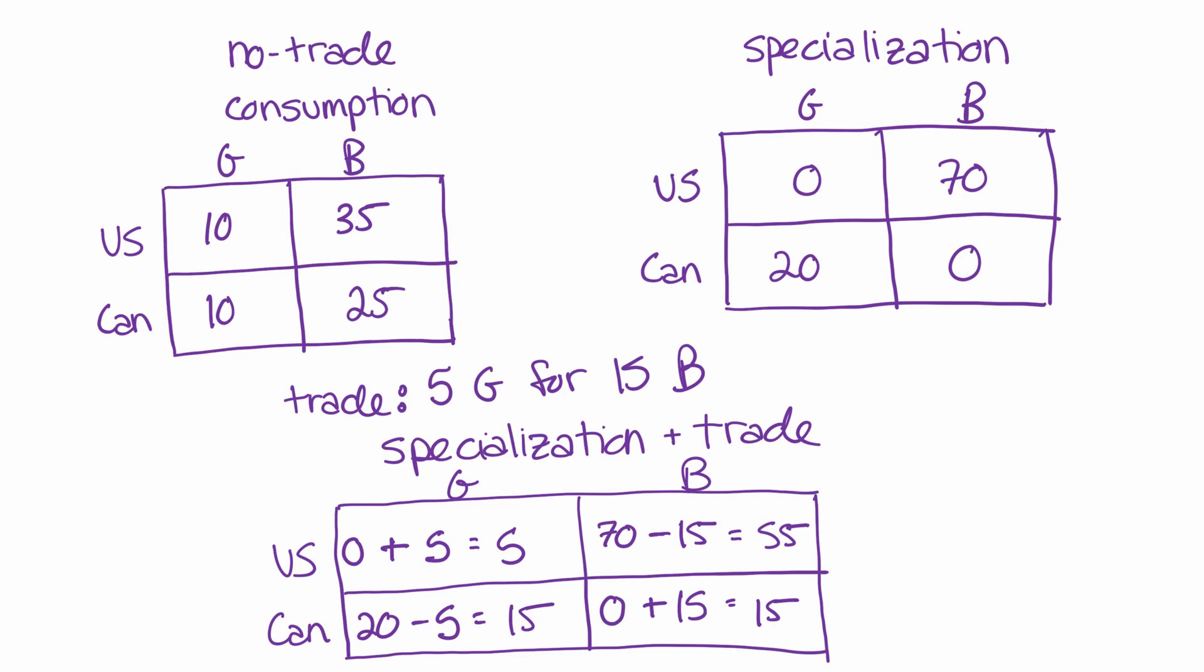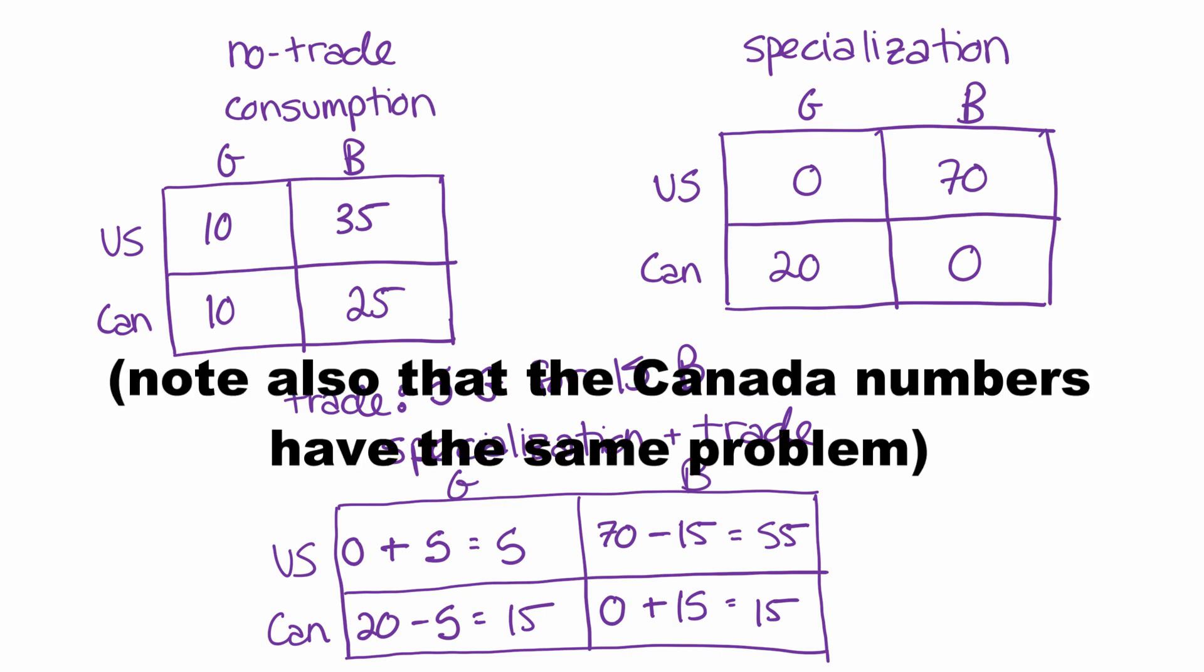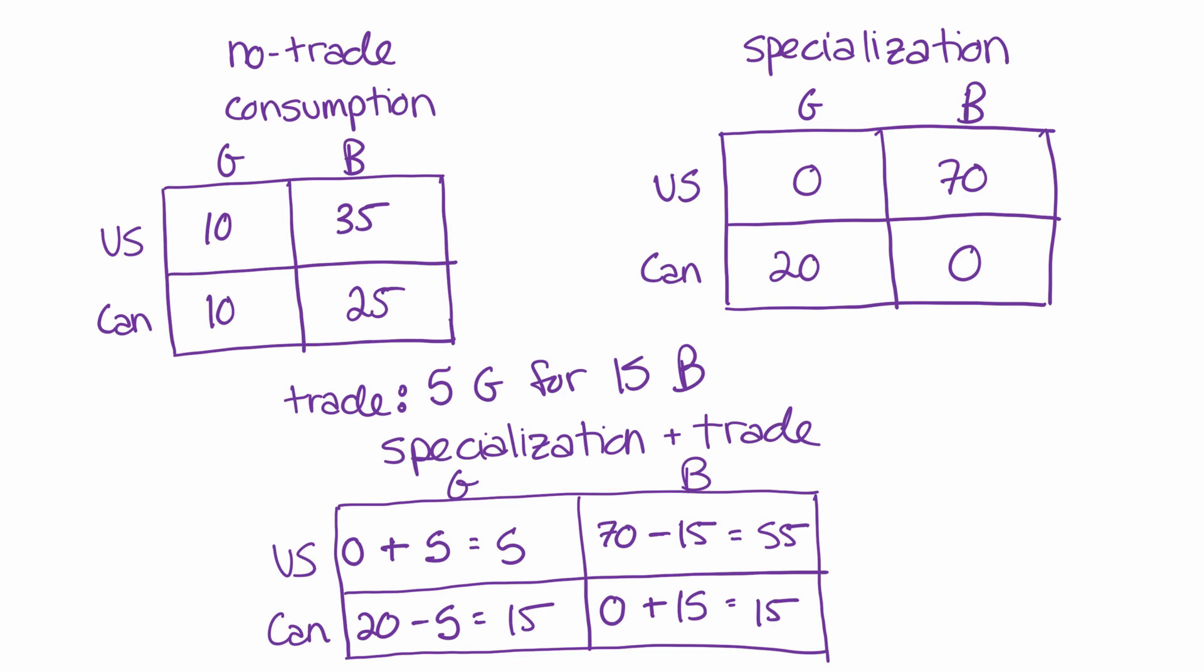To determine whether they're specifically better off, we would need more information regarding how much they like guns versus butter. And we don't have that. So you can think of the price of the trade being a necessary condition for both parties to be better off, but it's not totally sufficient. We also have to have the trade being a proper size so that both parties have at least as much of both goods as they were consuming before trade.